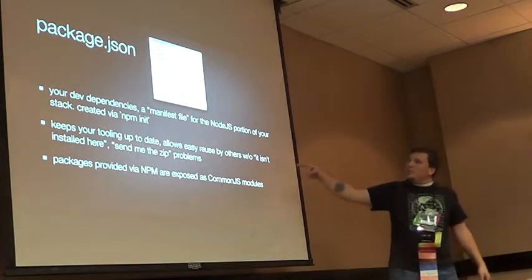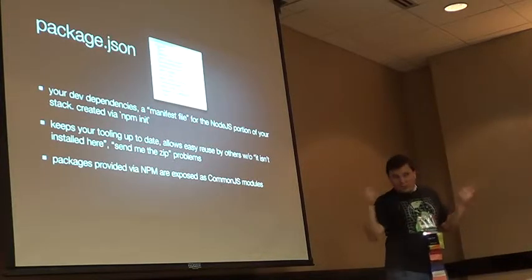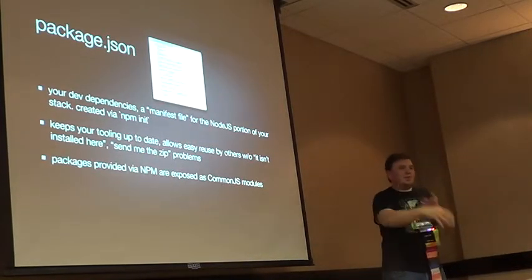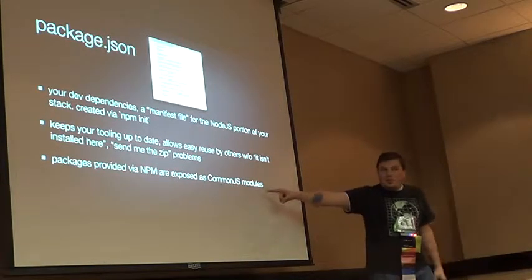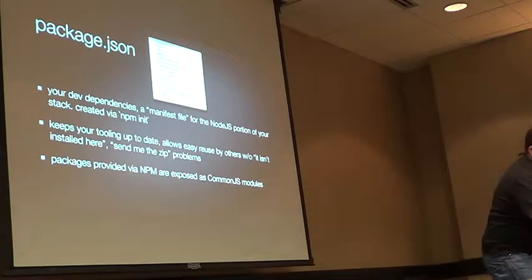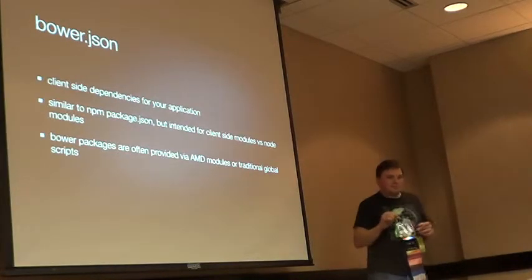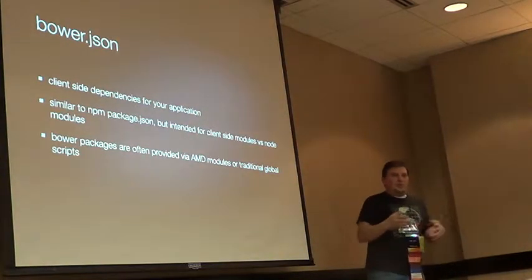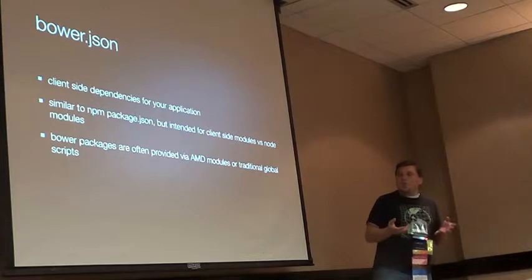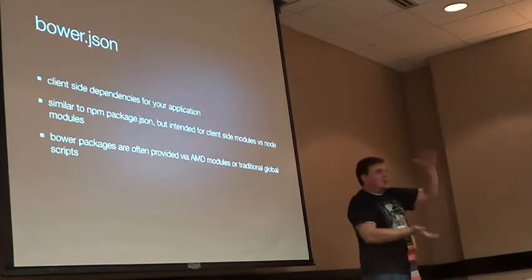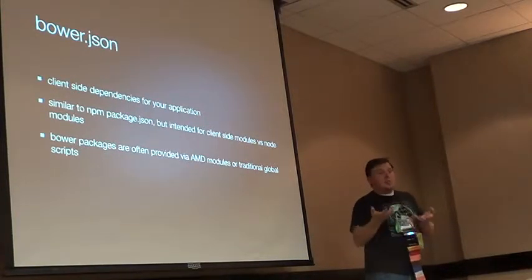NPM also lets other people use your project without worrying about having the wrong version of stuff. You can check out my project, run 'npm install,' and it'll pull all the dependencies in for you. There's another one called Bower. Because not everybody's using Node for development, but they still want a manifest file, Bower is something that Twitter started that gives you a manifest file, pulls in libraries, puts them in a folder, and then you can include them in a more traditional way — usually in a script tag.